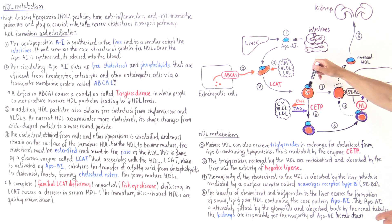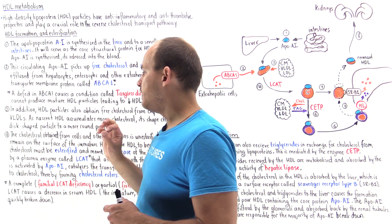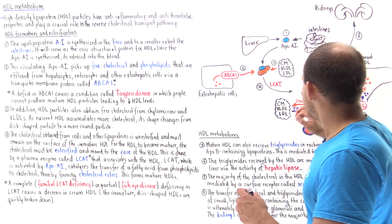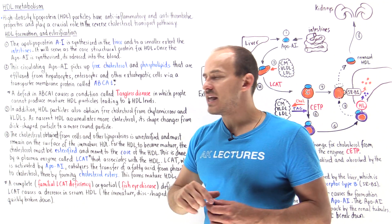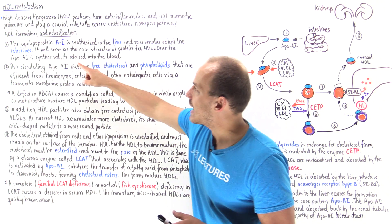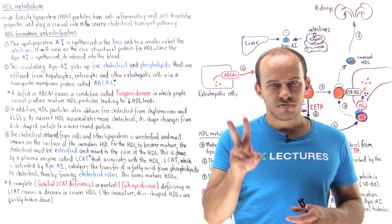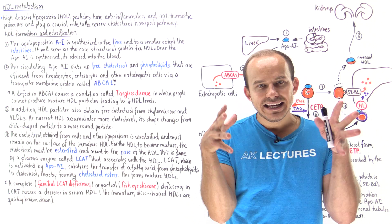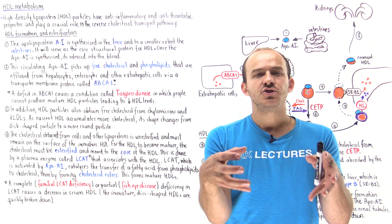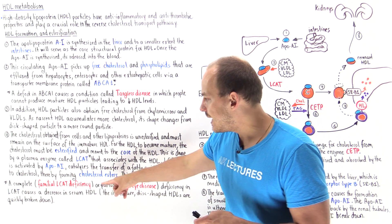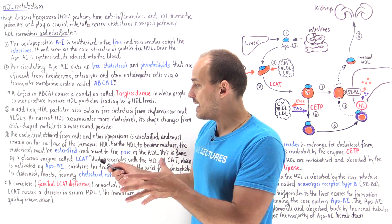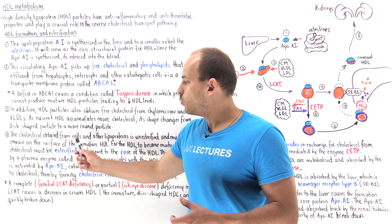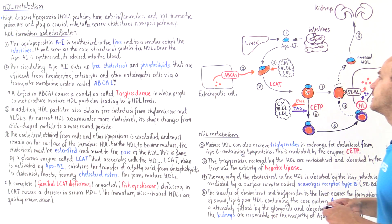We have a relatively spherical mature HDL molecule, with apolipoprotein A1 shown in blue. For LCAT to be fully functional, apolipoprotein A1 must act as a cofactor to stimulate LCAT activity. So apolipoprotein A1 has two important functions: number one, it gives structure to the entire HDL particle, and number two, it catalyzes or increases the efficiency of LCAT. Without apolipoprotein A1, we can't carry out the process of esterifying cholesterol.